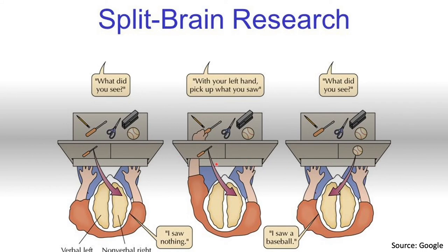If we put a screwdriver on the left side and ask them to pick it up, they're going to pick it up because the right side — which is in charge of perception and spatial relationships — is processing that information. Remember, we have a contralateral brain, so the right side of the brain controls your left side of the body, which is why he can pick it up.